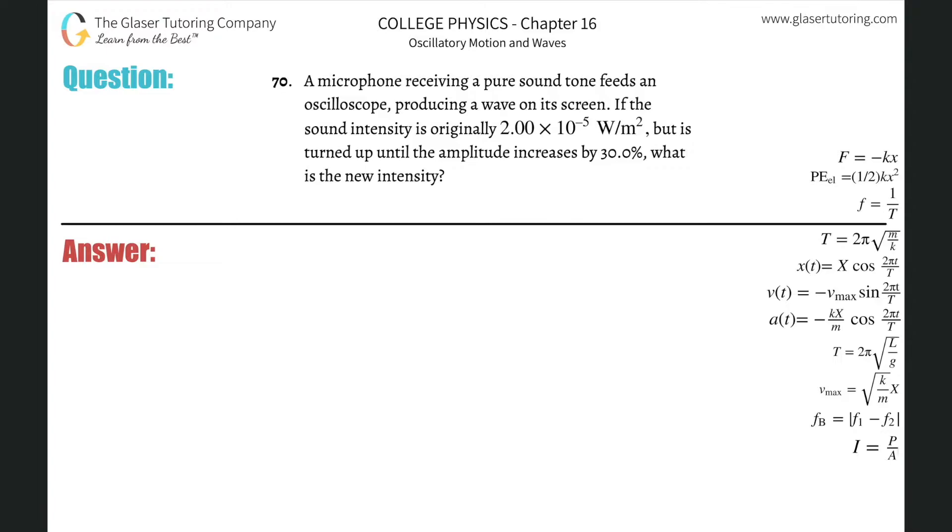Number 70. A microphone receiving a pure sound tone feeds an oscilloscope producing a wave on its screen. If the sound intensity is originally 2 times 10 to the minus 5 watts per meter squared but is turned up until the amplitude increases by 30 percent, what is the new intensity? So basically we have to relate intensity to amplitude.